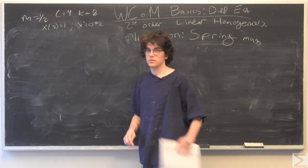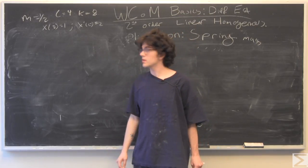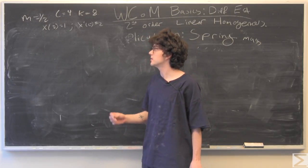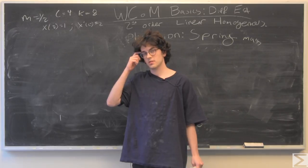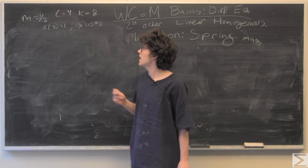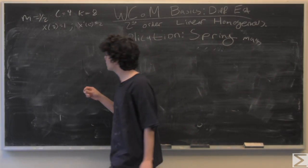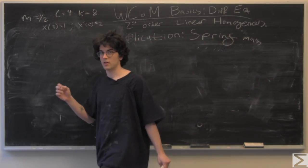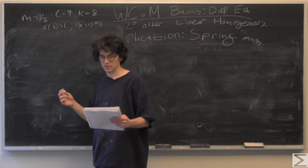So we have a system with some damping going on and a spring and a mass. The spring constant is 8, mass is 1/2, damping coefficient is 4.